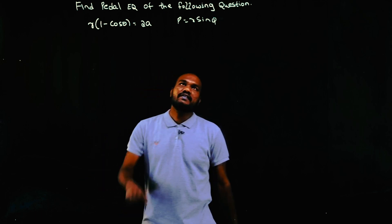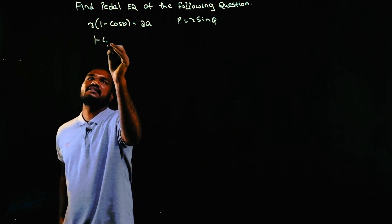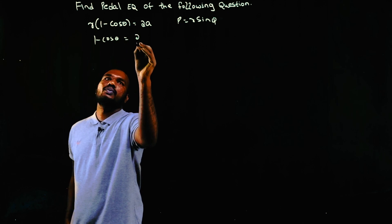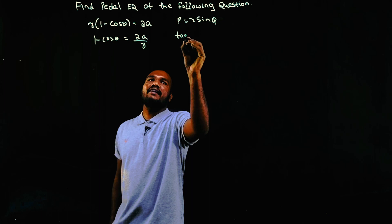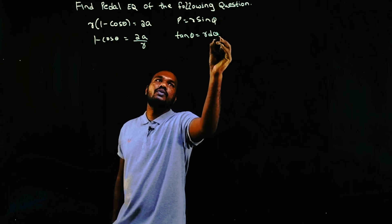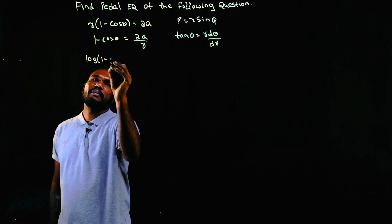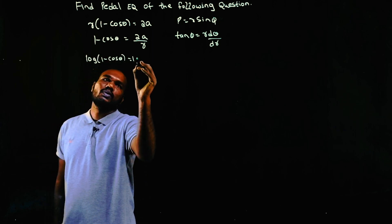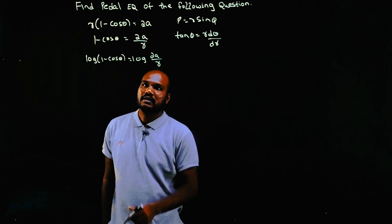I'll write this in a better way: 1 - cos θ = 2a/r. Now to find φ, we have to find tan φ, that is r dθ/dr. So let's take log on both sides: log(1 - cos θ) = log(2a/r).